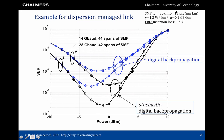Let's look at numerical results for a realistic optical system. On the horizontal axis is input power to the fiber system; on the y-axis the symbol error rate. Results are shown for two cases: a lower-rate case with 44 spans of fiber and a higher-rate case with 42 spans. Blue curves correspond to digital backpropagation and black curves to stochastic digital backpropagation. In both cases we see significant gains. At very low input powers both algorithms behave similarly, but as nonlinear signal-noise interaction becomes more important, stochastic digital backpropagation has a significant advantage. At very high input powers nonlinear signal-noise interaction causes the symbol error rate to rise again.